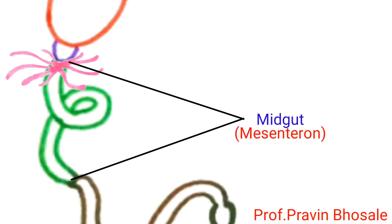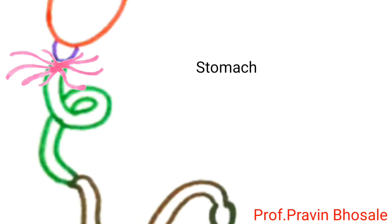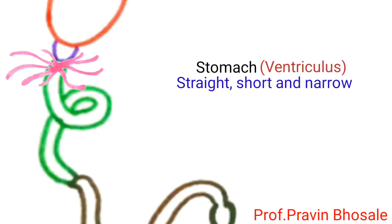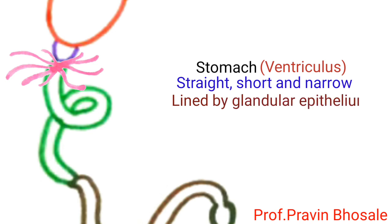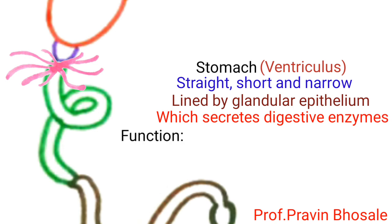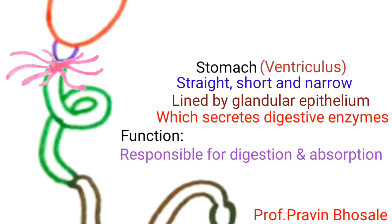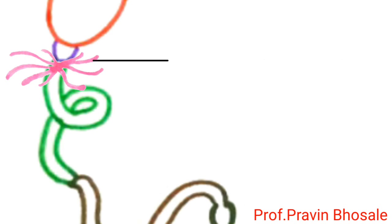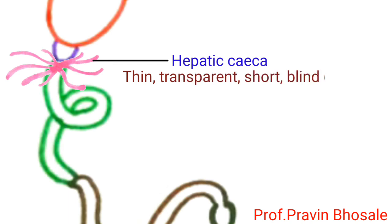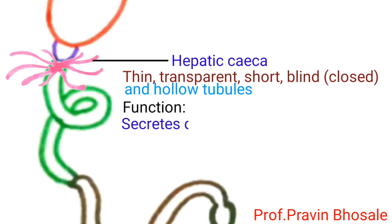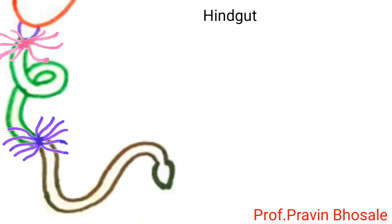Midgut, that is mesenteron, consists of stomach and hepatic caeca. The stomach, or ventriculus, is a straight, short and narrow sac lined by glandular epithelium which secretes digestive enzymes. Its function is responsible for digestion and absorption.